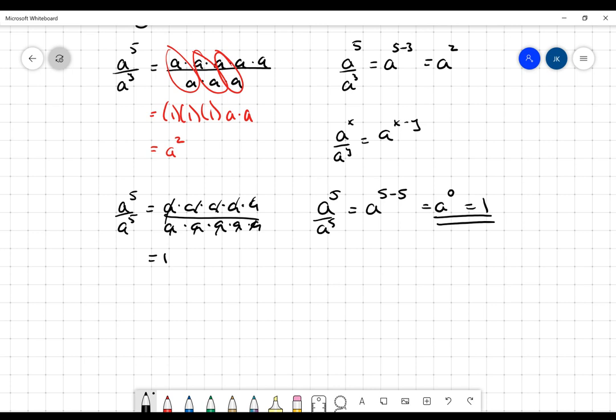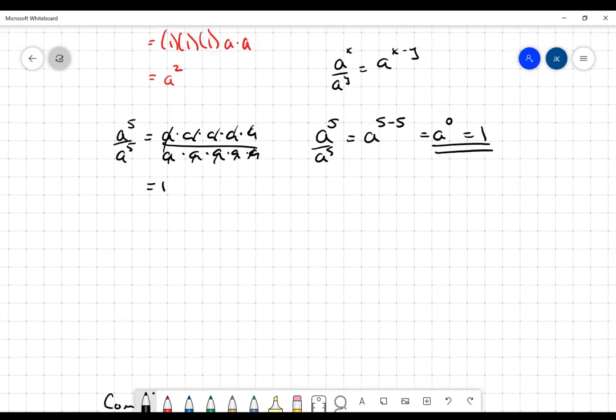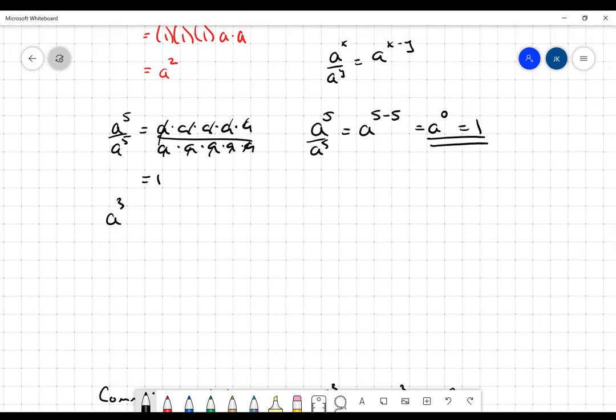With this in mind, we're just going to go one step further. What if it goes the other way around? What if we've got a cubed over a to the fifth, in which case I have three factors of a in the numerator and five in the denominator? Just like what happened before, that becomes a one, that becomes a one, that becomes a one. But what I'm left over with here are two factors of a in the denominator, which becomes a squared.